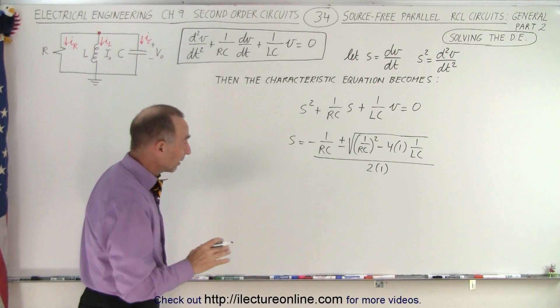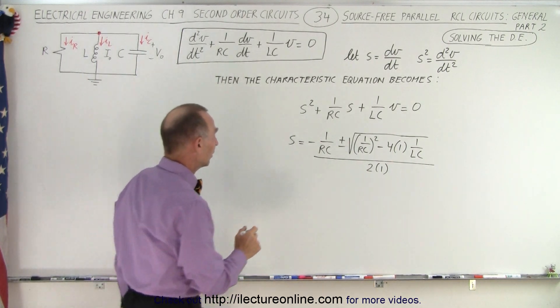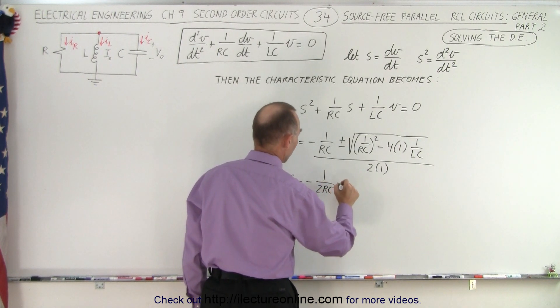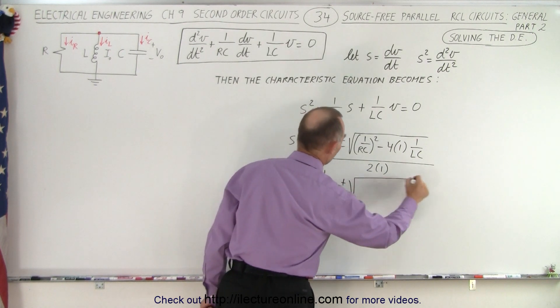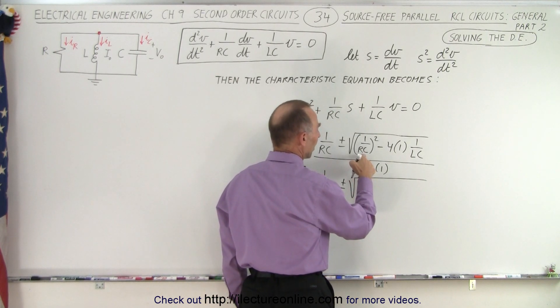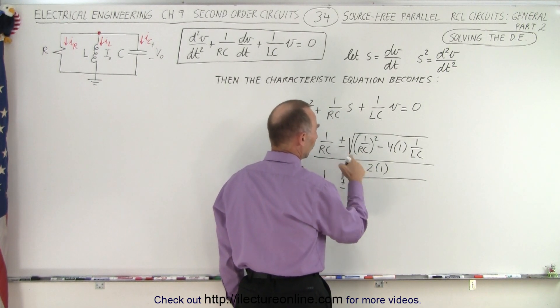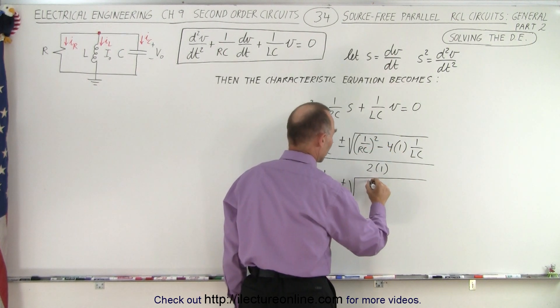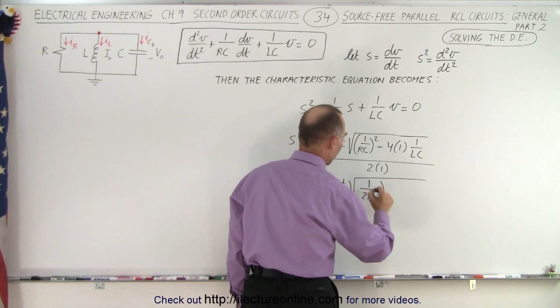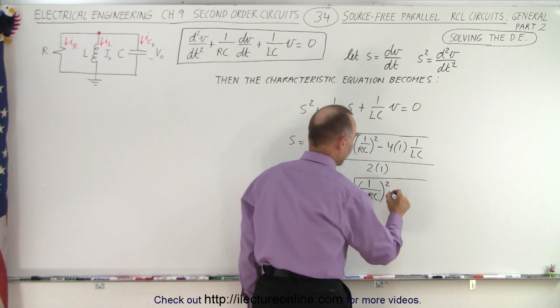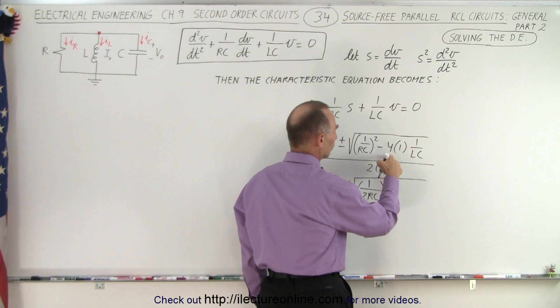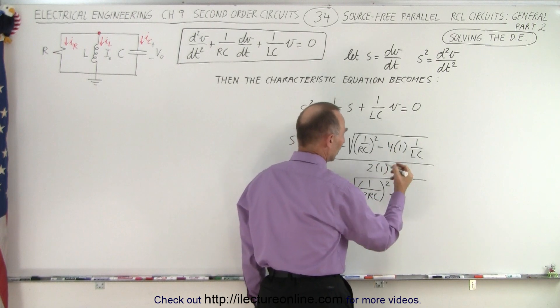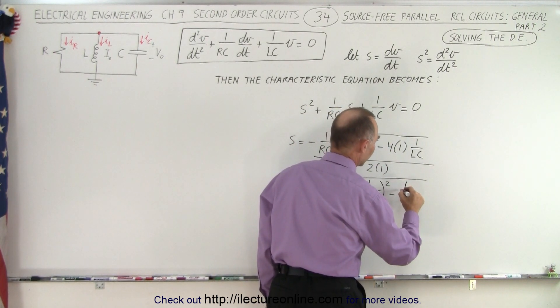We can now simplify that a little bit by moving that 2 into the numerator, so we can write this as S equals minus 1 over 2RC, plus and minus the square root of—and we'll bring the 2 into the denominator. First we need to square it to move it inside the radical, but then we already have it squared right here, so this could be written as 1 over 2RC quantity squared, minus—